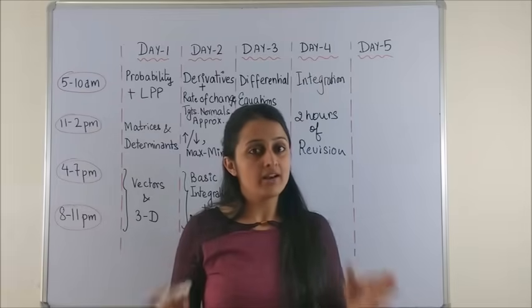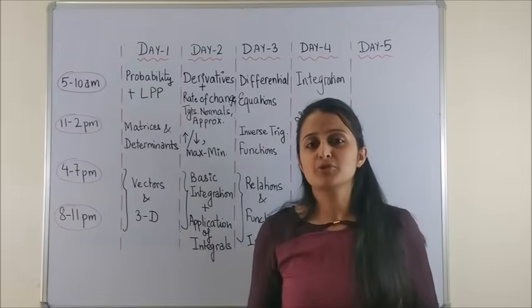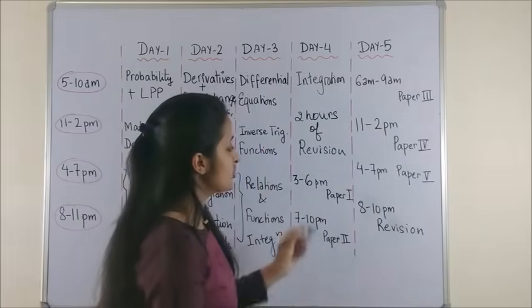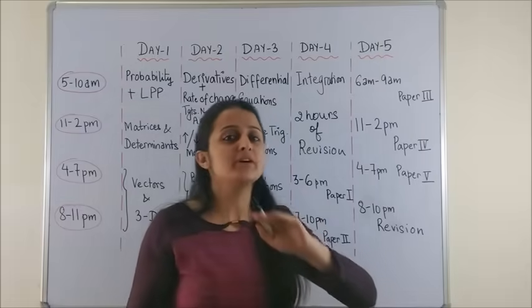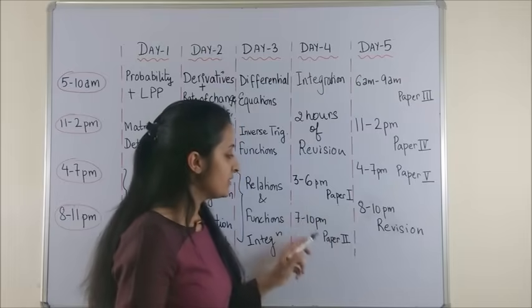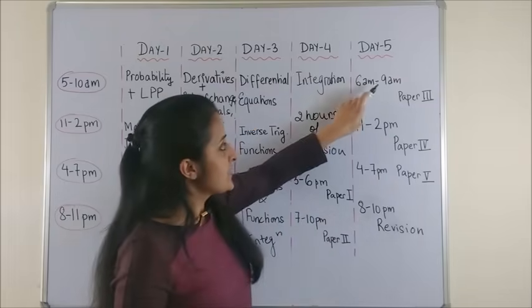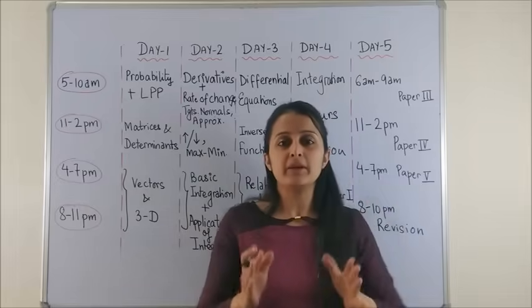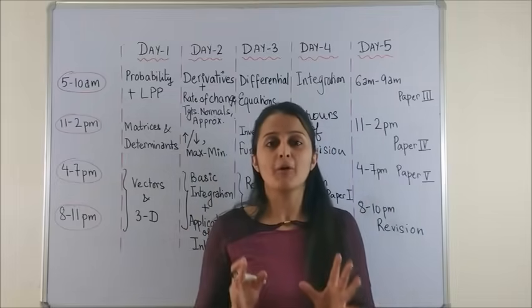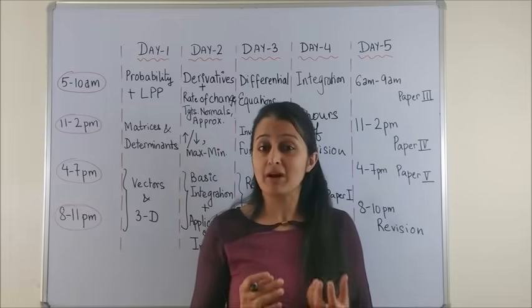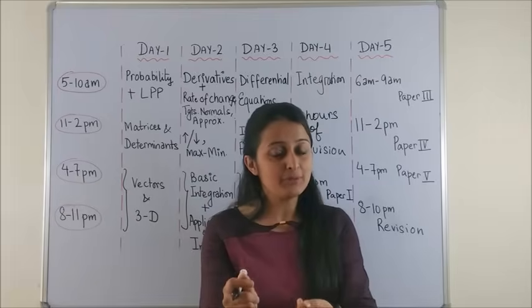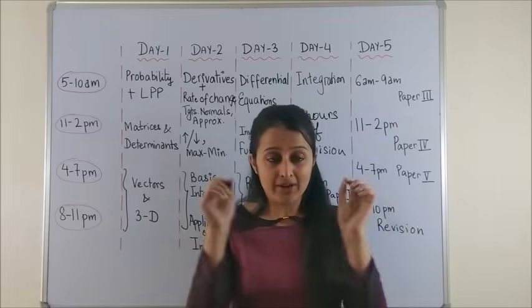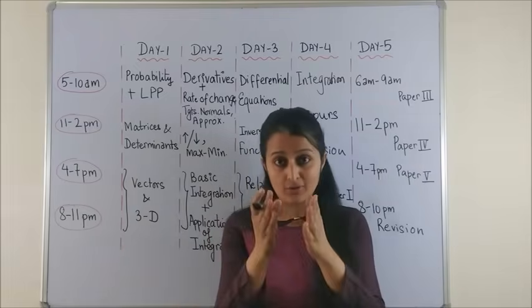Once you're done with that, the real challenge begins. Solve as many sample papers as possible — after 2 hours of quick revision, sit down and give papers. This could be sample papers or previous year papers: 3 to 6 paper 1, 7 to 10 paper 2, then the next day 6 to 9 paper 3, 11 to 2 paper 4, and 4 to 7 paper 5. Make sure when you give the paper, you imitate the examination hall as much as possible — have someone give you the paper on time and snatch it away when time is up. No extra time, no sitting too comfortably, write on a table, no books around.